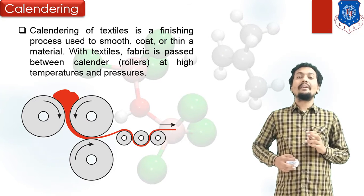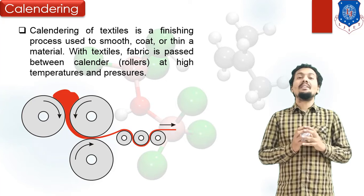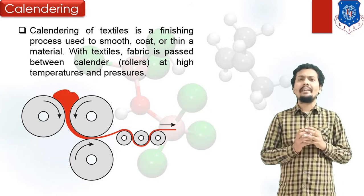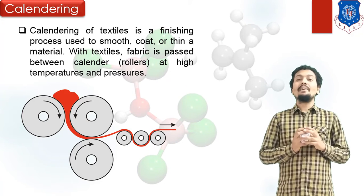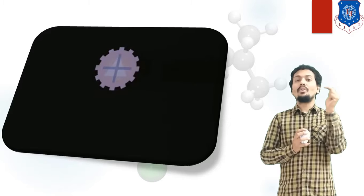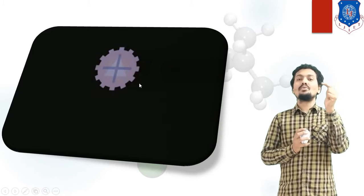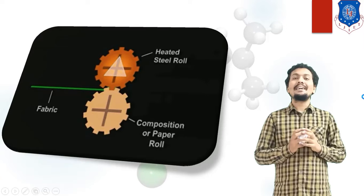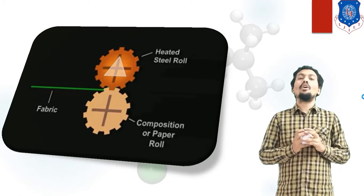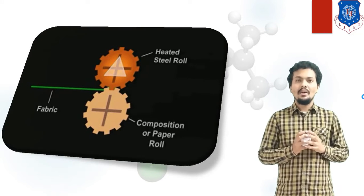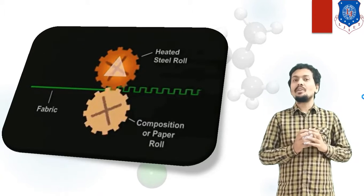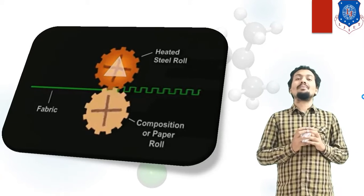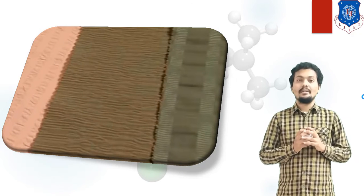Let's have a look at the Calendering process in this video. Between two steel rollers, one roller has the geometry to be made. The fabric or component is passed through this roller, and a zigzag or patterned geometry can be made on the plastic or material. On clothes or fabric, you can make any impression, geometry, or pattern with the help of this Calendering process, making it important for textile industries.